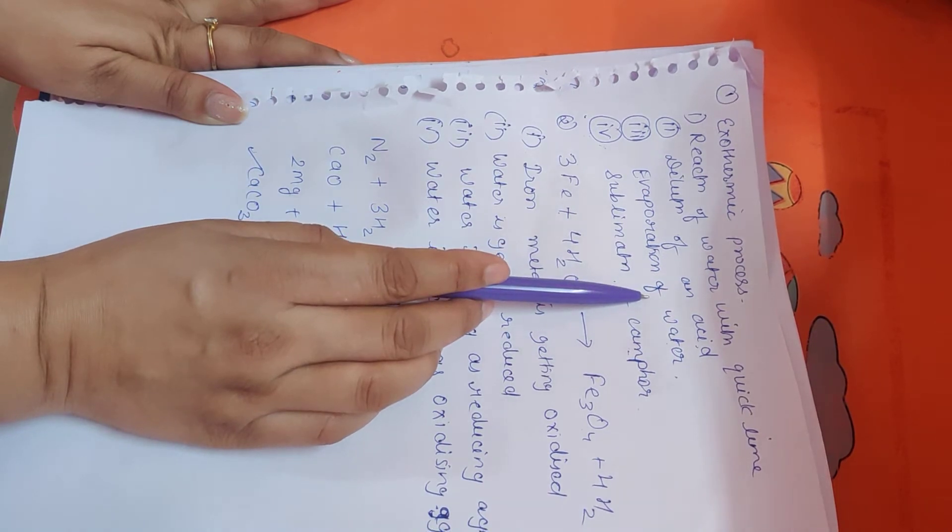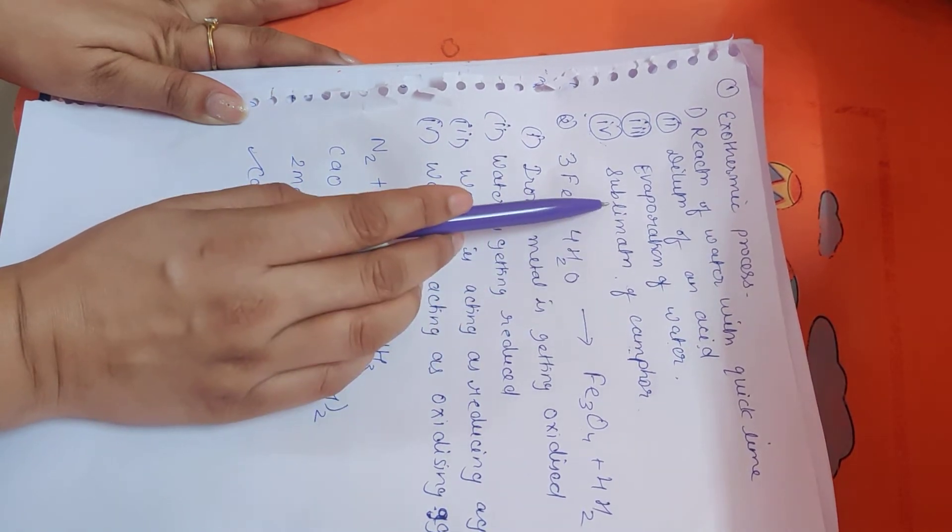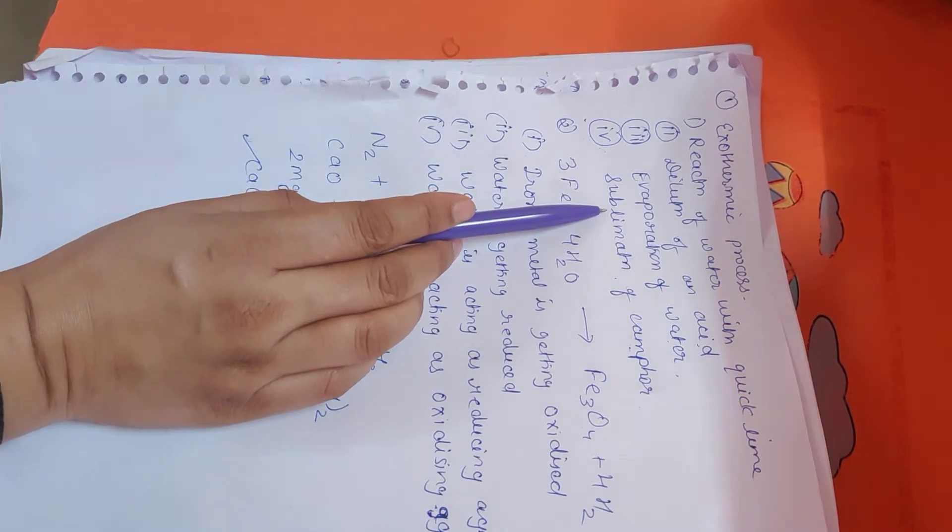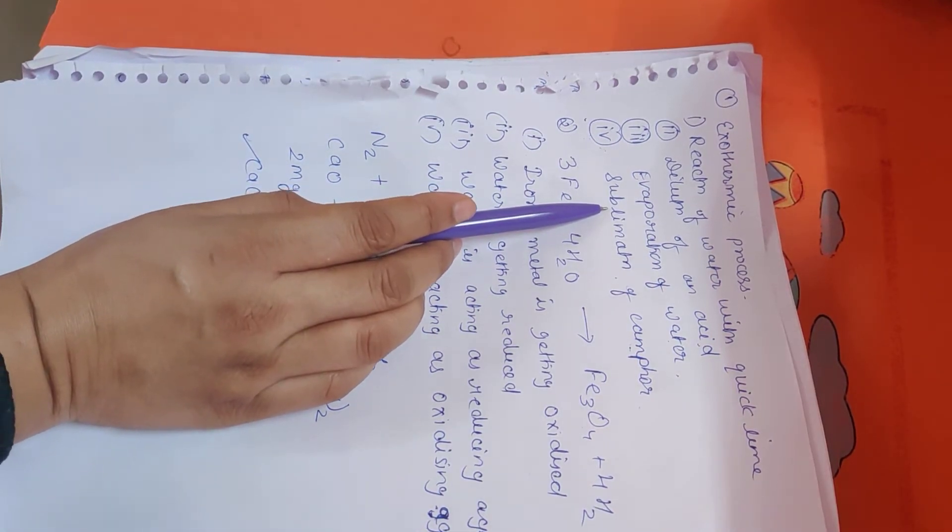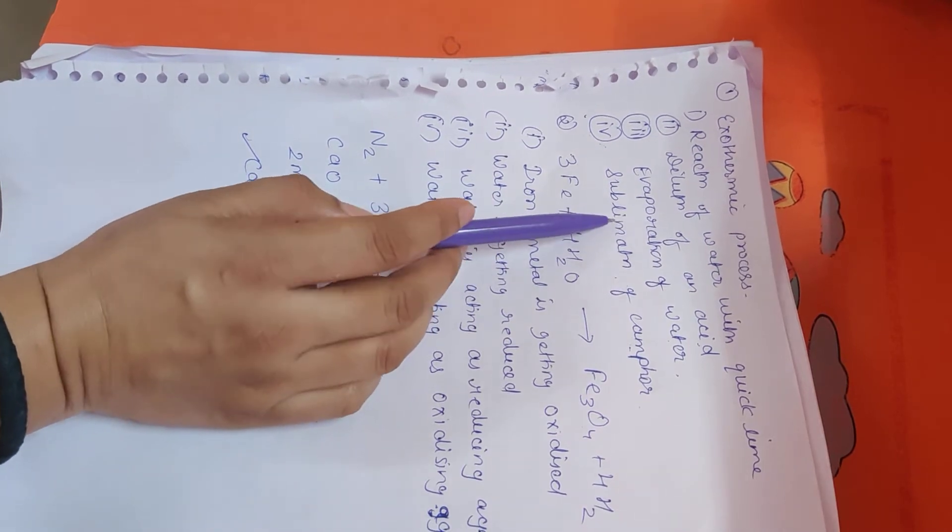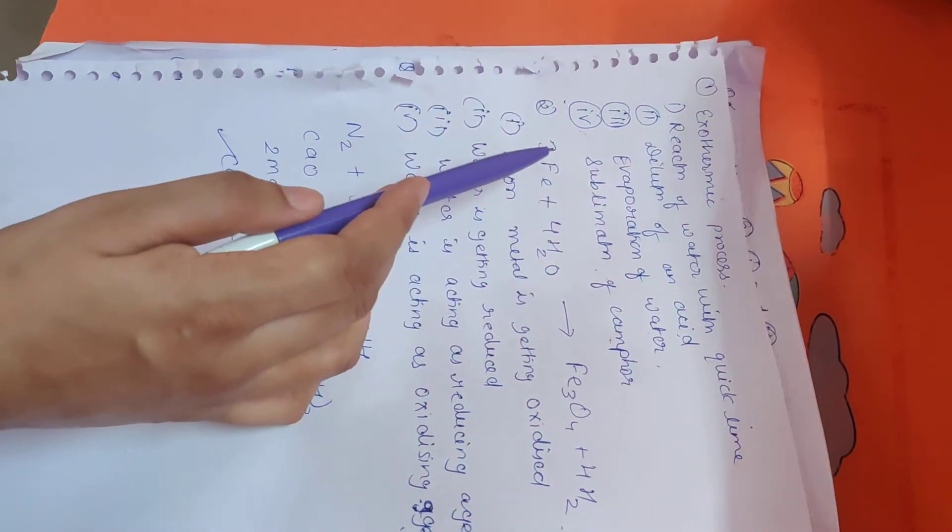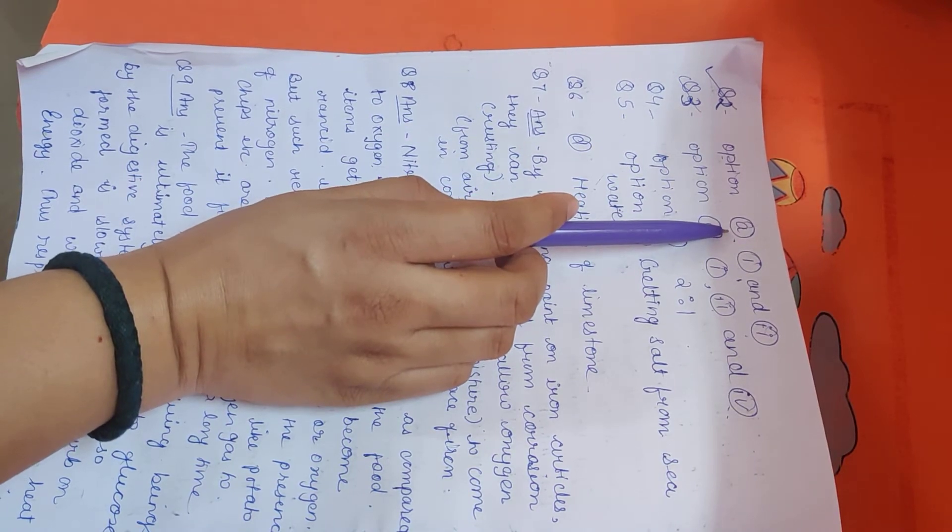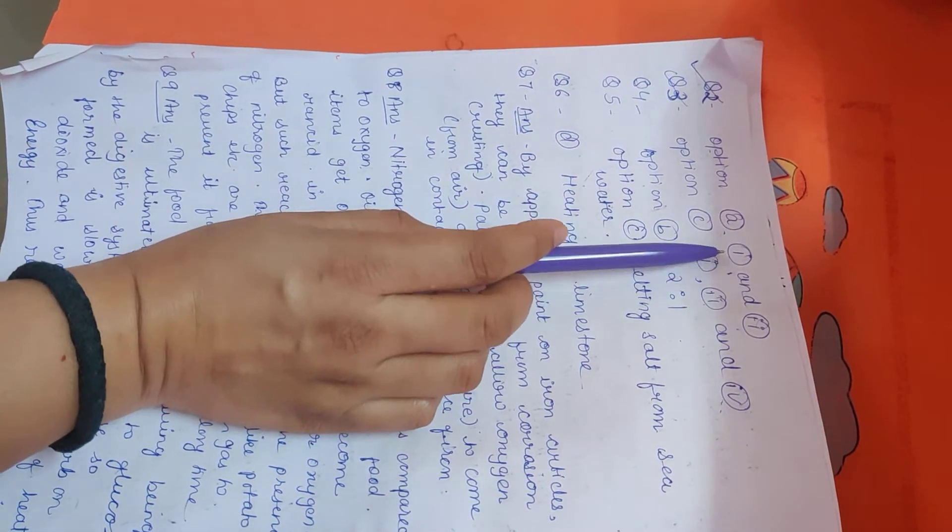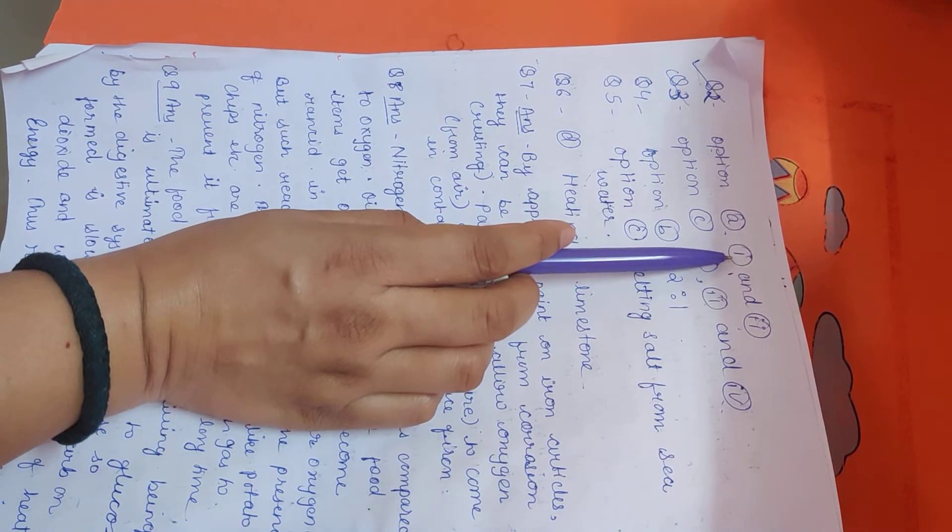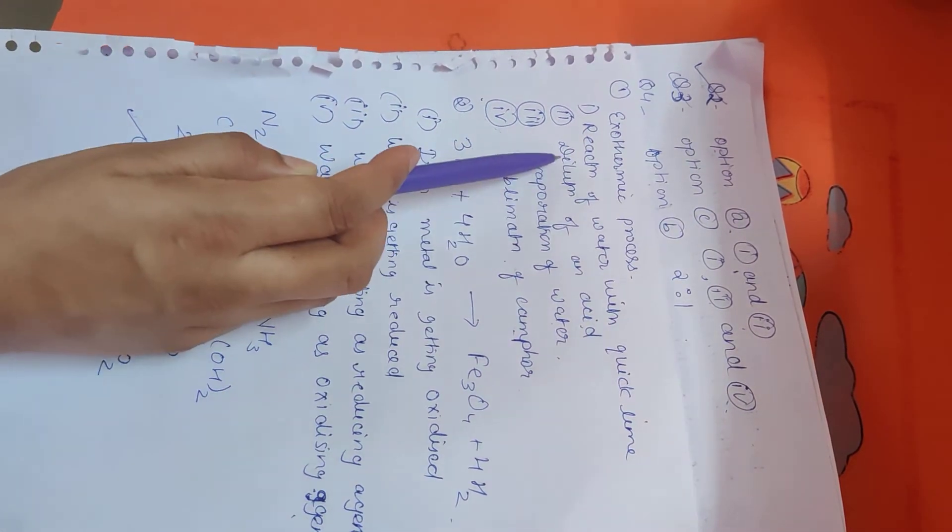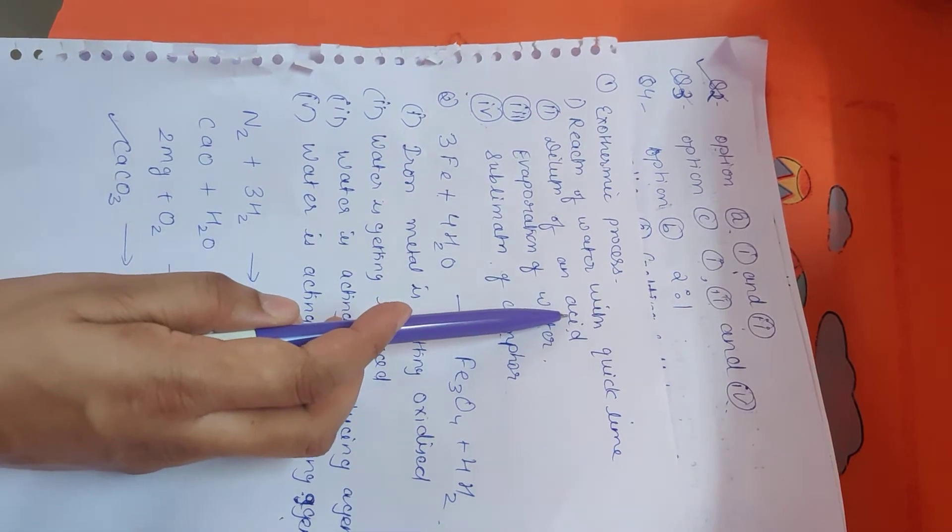Evaporation of water is not an exothermic reaction, and sublimation of camphor is also not an exothermic reaction, because in both of these, heat is not evolved. So the right answer is option A, that involves 1 and 2, the reaction of water with quicklime and dilution of an acid.